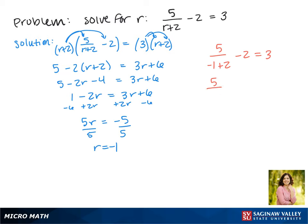That -1 + 2 in the denominator gives us 1. 5 divided by 1 is 5, so this gives us 5 - 2 = 3. This is true. 3 does equal 3, so r = -1 is our solution.